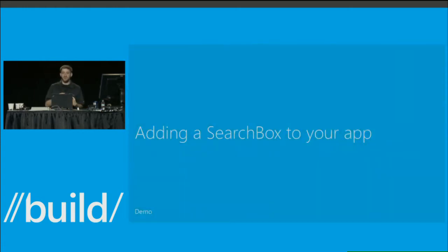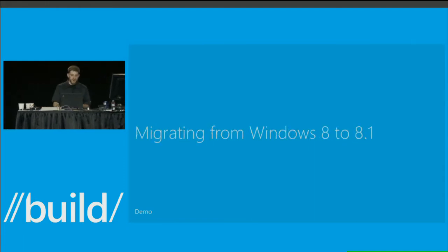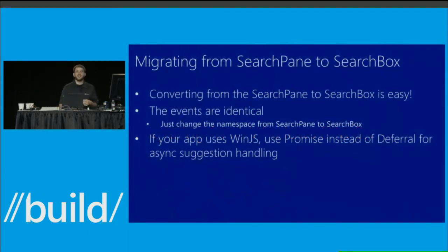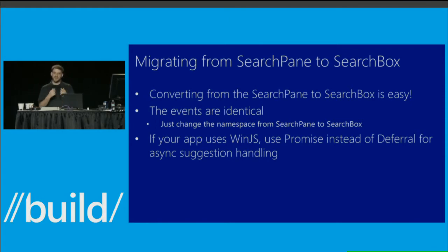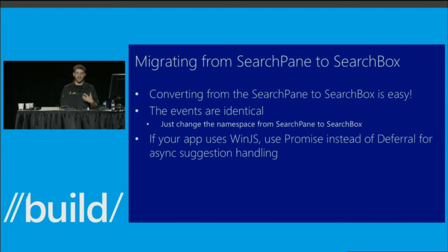What about moving from an app that already has search using the Windows 8 search contract to using the search box? It's really easy — all of the events between the search box and the search pane are identical. Instead of attaching event listeners to the search pane, just attach them to the search box control. Some event details changed slightly for consistency, but it doesn't take more than a minute or two to move from a search pane implementation to a search box implementation, and you get all the extra flexibility.